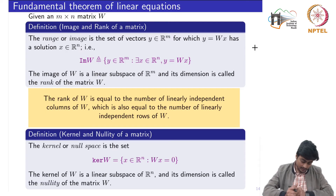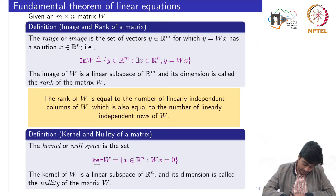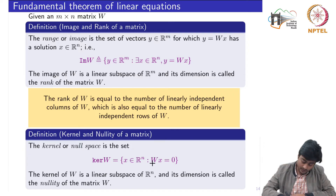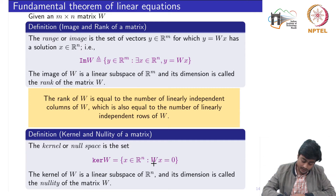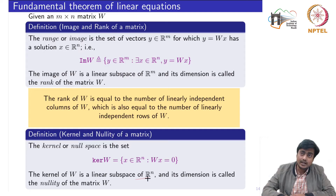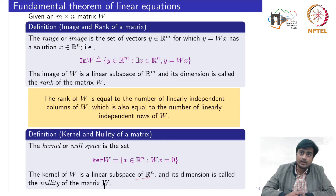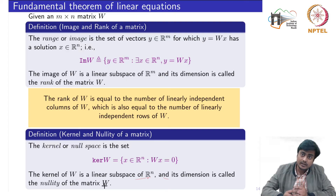Another space is called the null space or kernel. The kernel of W contains all vectors x which satisfy Wx = 0, the zero vector. The kernel of W is also a linear subspace of n-dimensional space, and its dimension is called the nullity of the matrix W. So the dimension of the image is called the rank, and the dimension of the kernel is called the nullity.